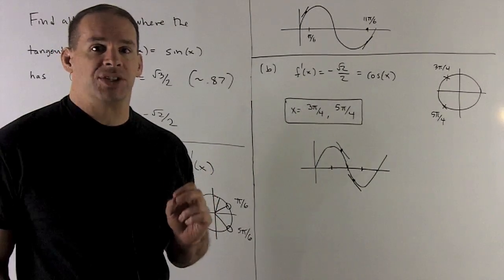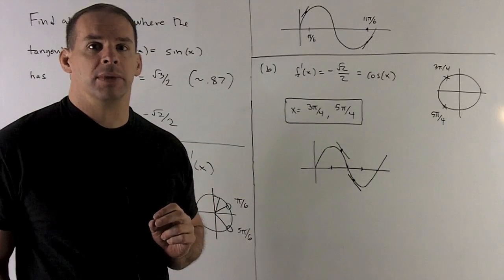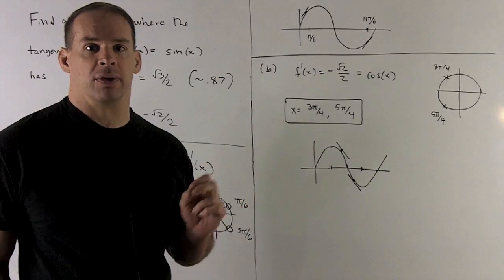All right, let's try minus square root of 2 over 2. So in this case, we just want the cosine equal to minus square root of 2 over 2.